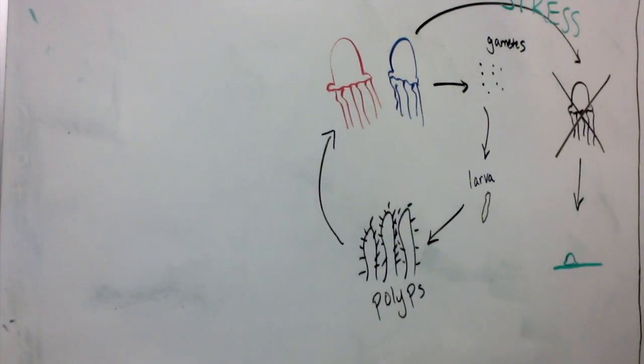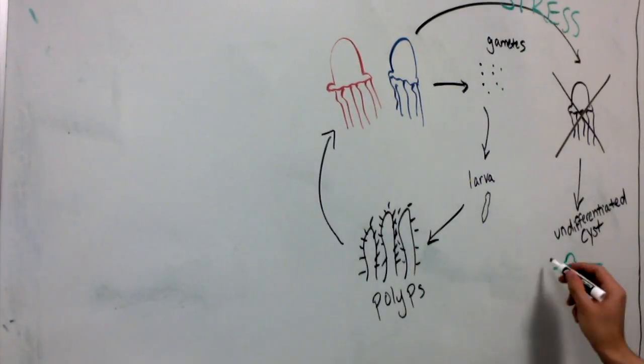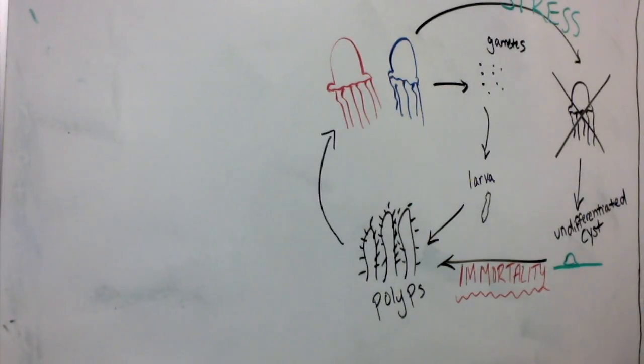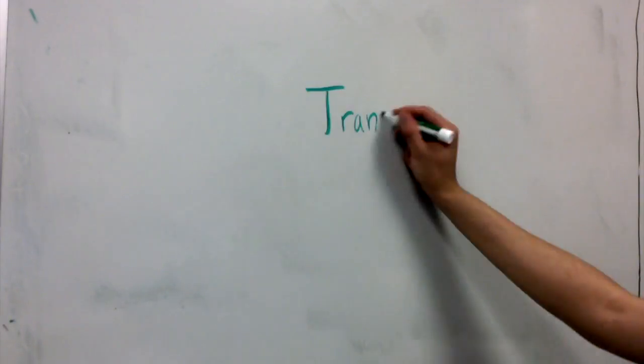So in that way, they are immortal because they can always go back to the polyp stage and continue their life cycle when they can sustain more environmentally favorable conditions to reproduce. This is called trans-differentiation.